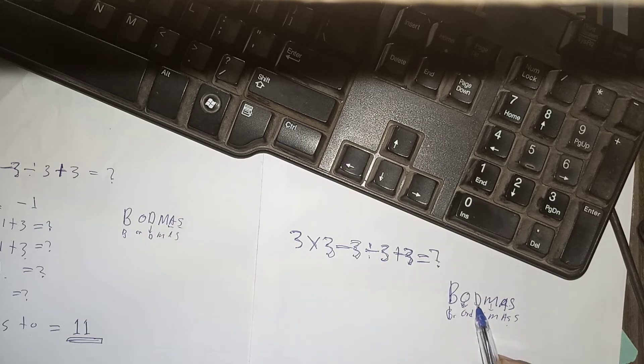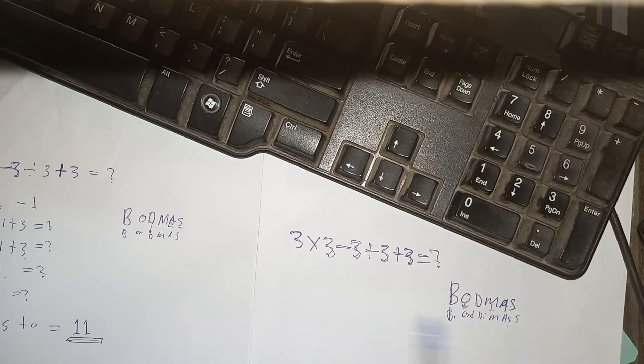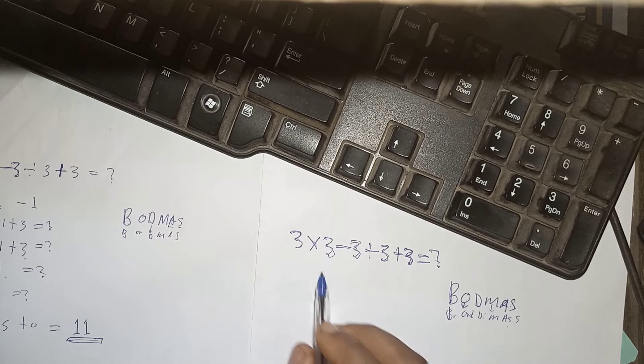This order of operation means we have to divide, we multiply, we add, and then lastly, we subtract.